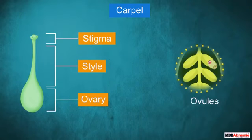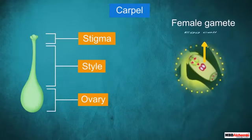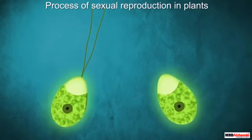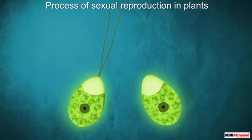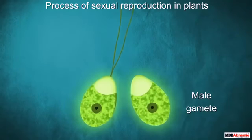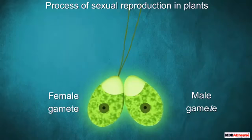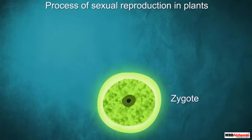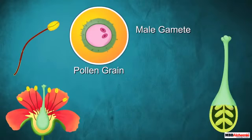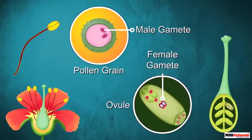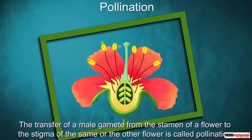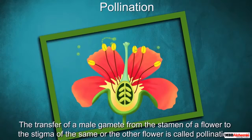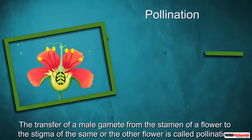Inside the ovary, ovules are present, and it is the ovule that has the female gamete called the egg cell. For sexual reproduction to take place, a male gamete is to be fused with the female gamete, thereby forming a zygote. For that, the male gametes have to reach the female gametes. First, a pollen grain carrying the male gametes is transferred from the stamen of a flower to the stigma of the same or another flower.